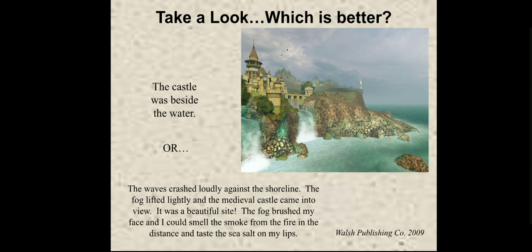Or you can describe it like: 'The waves crashed loudly against the shoreline' — now you can hear the sound of heavy waters. 'The fog lifted lightly as the medieval castle came into view' — you can picture the fog slowly moving away. 'The fog brushed my face' — you can feel the fog touching your face. 'You could smell the smoke from the fire in the distance and taste the sea salt on my lips.' So the writer tried to use all five senses in this paragraph to create a better image in the reader's mind.